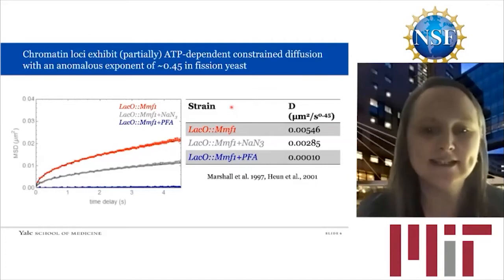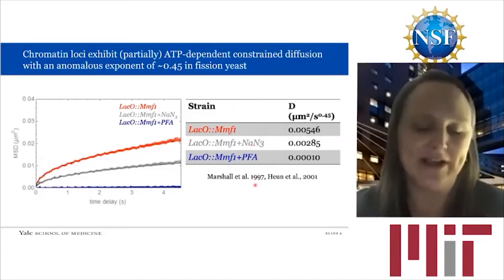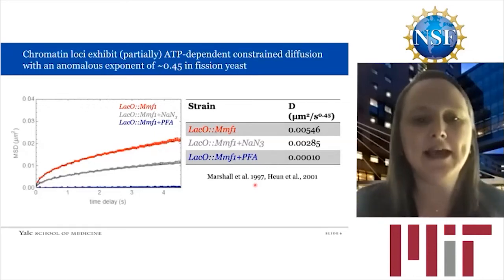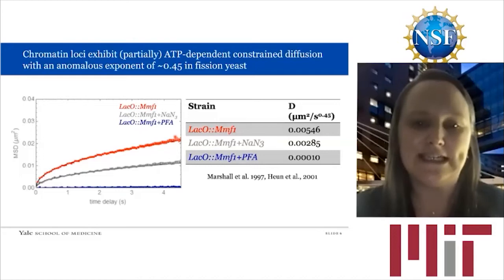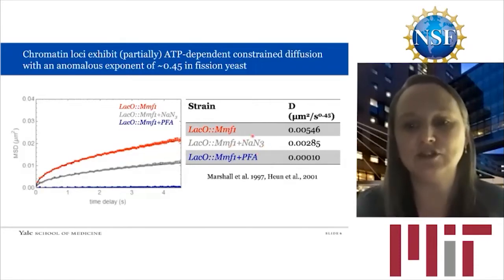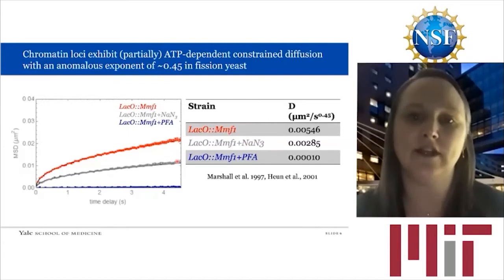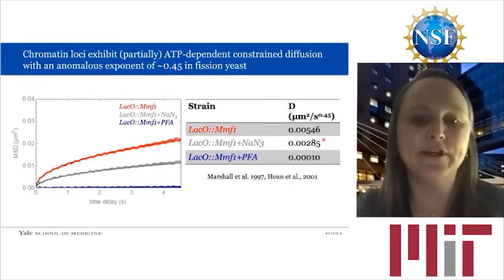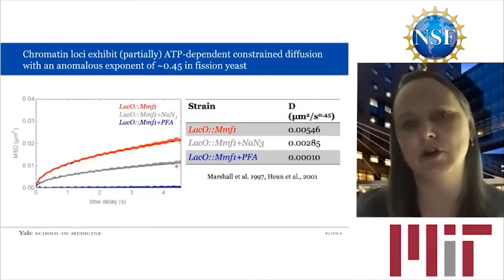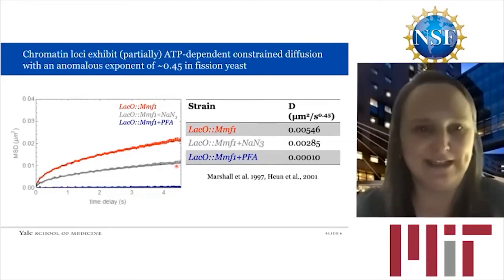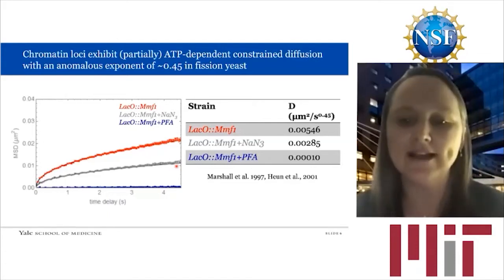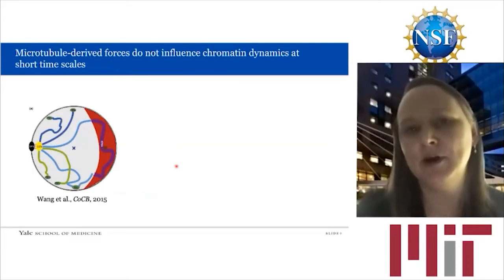One of the other long-appreciated mysteries is that the motion observed for a chromatin locus in a live cell is dependent on energy. At the MMF1 locus, if we deplete energy by addition of sodium azide, this has a profound effect on the observed chromatin mobility — diffusivity drops by about 50%. We also show fixed cells to confirm the motion is true chromatin mobility. The source of the ATP-driven energy that drives chromatin mobility has long been a mystery and is one of the things we hoped to address in this study.